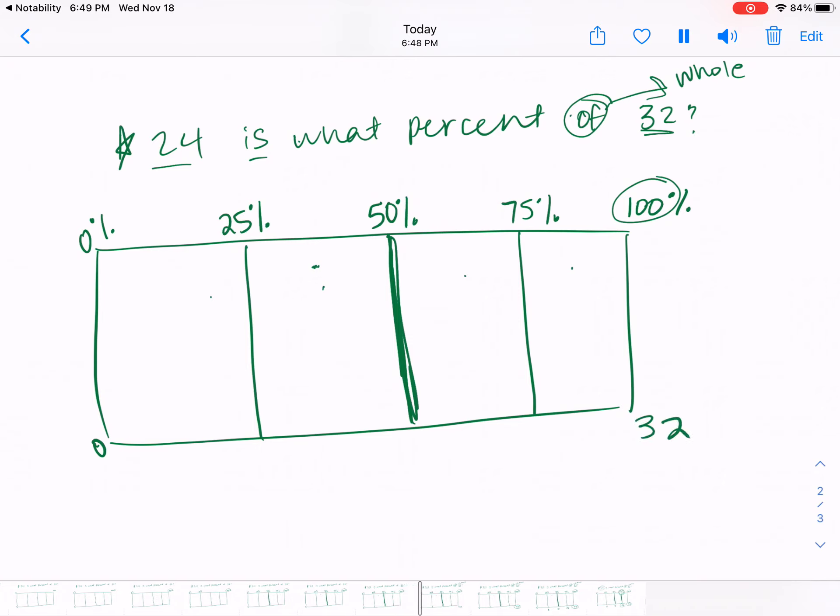And again like since there's four sections I'm going to divide 32 by four. 32 divided by four is eight. So my sections should be at a size of eight. So I'm going to count by eights down here.